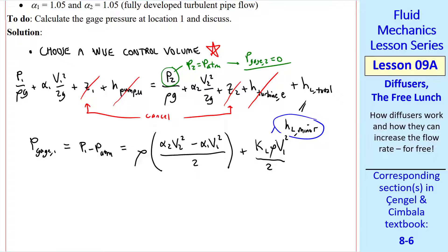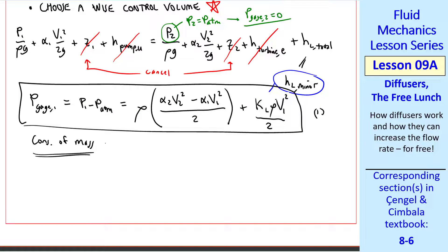Well, we were given V one, but we don't know V two. So we'll use conservation of mass for incompressible flow. V two equal V one A one over A two equal V one little D over big D squared.